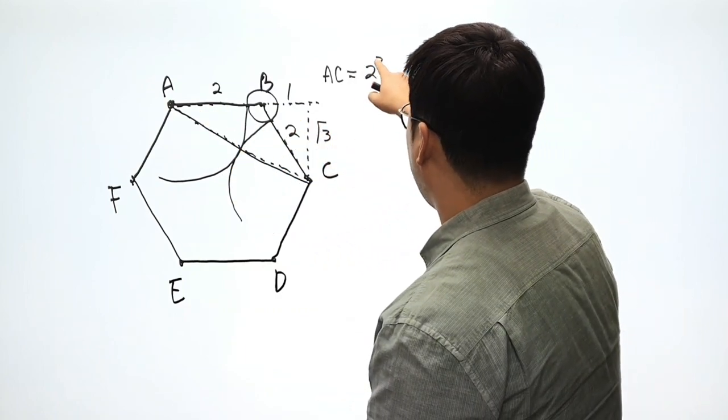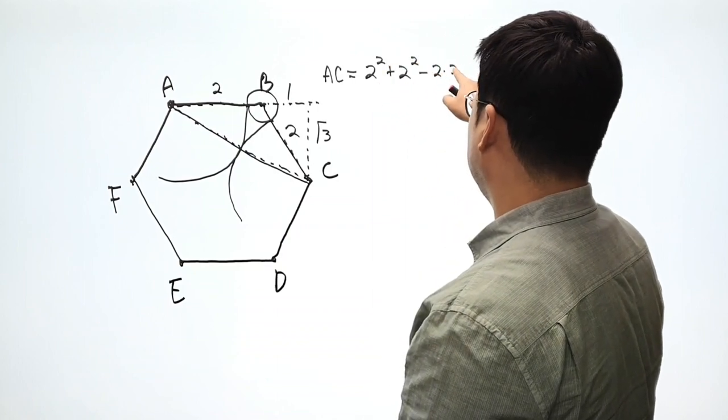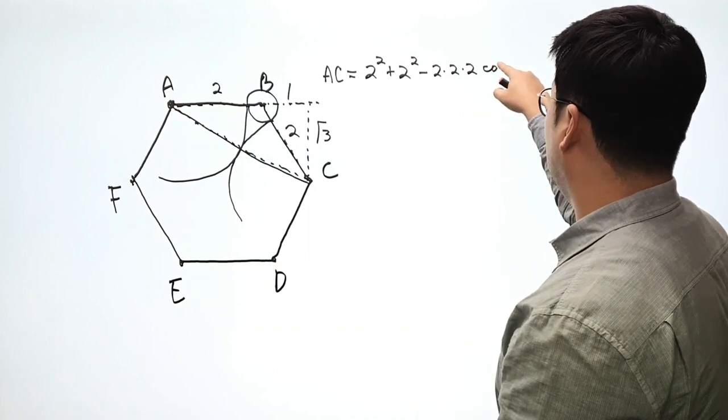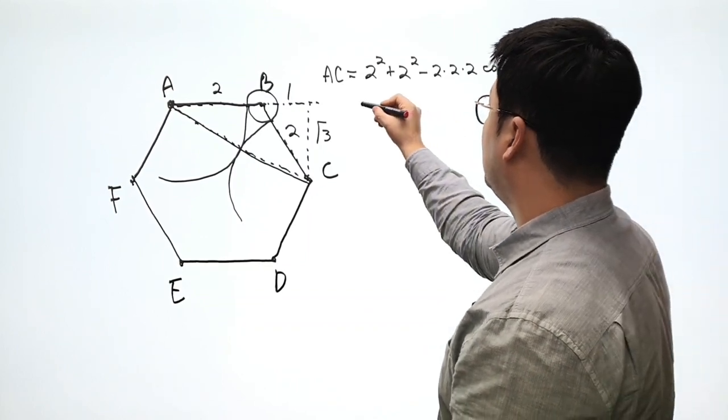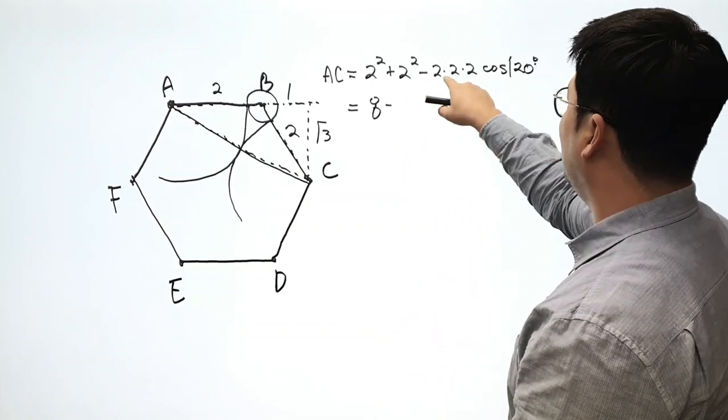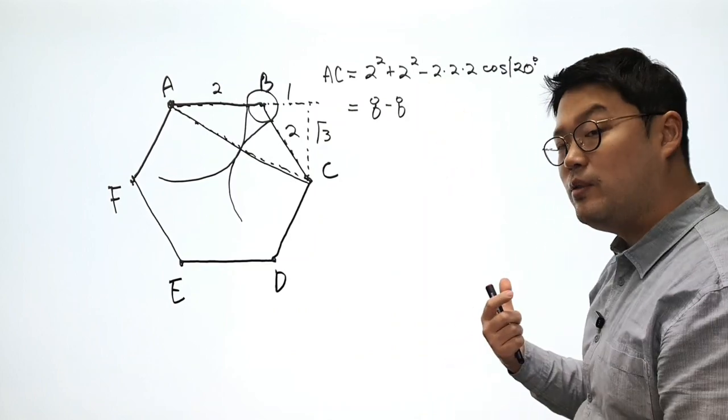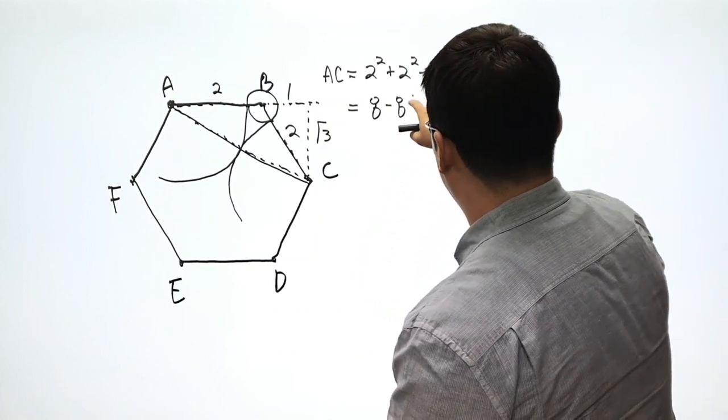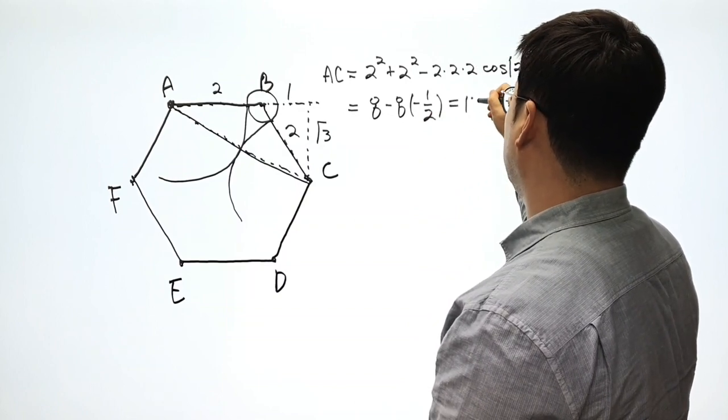And if I use law of cosines, well, it's two squared plus two squared minus two times two times two cosine 120. Okay. All right. So cosine 120, that becomes eight minus, what is this? That becomes eight times cosine 120. And cosine 120 does look like negative one half. All right. So we have negative one half, that becomes 12.